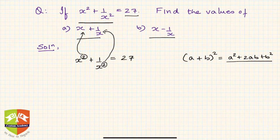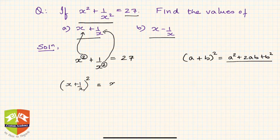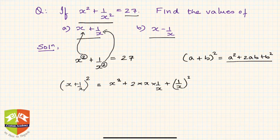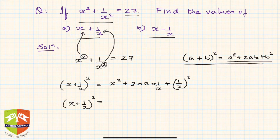So if we square the target — the target is x plus 1 upon x — what will you get? You will get x squared plus 2 times x times 1 by x, plus 1 upon x whole squared. So x plus 1 upon x, when squared using this identity, equals x squared plus 2 plus 1 upon x squared. This x and this x can be cancelled.